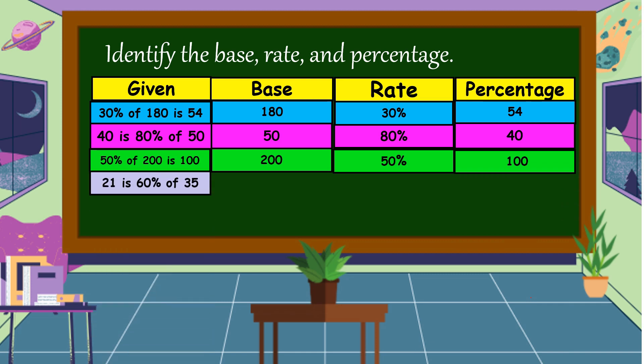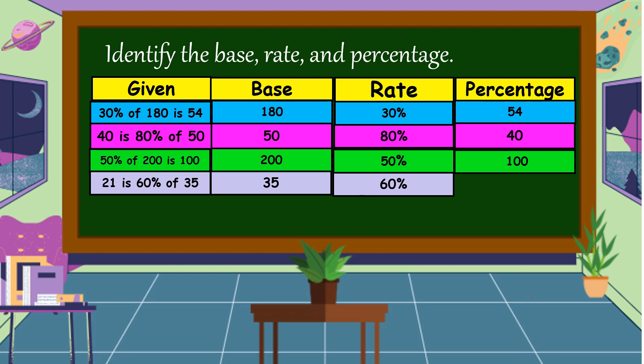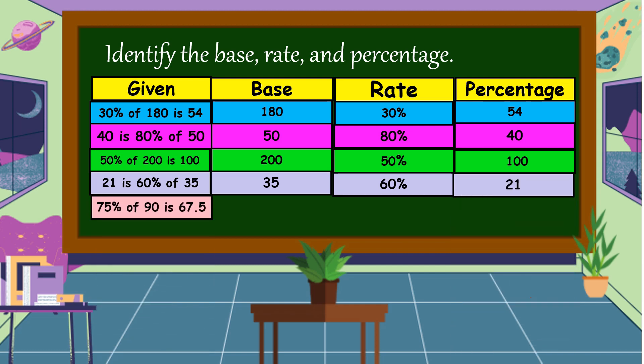Next example: 21 is 60% of 35. What is our base? The base is 35. The rate is equal to 60%, and the percentage is 21.